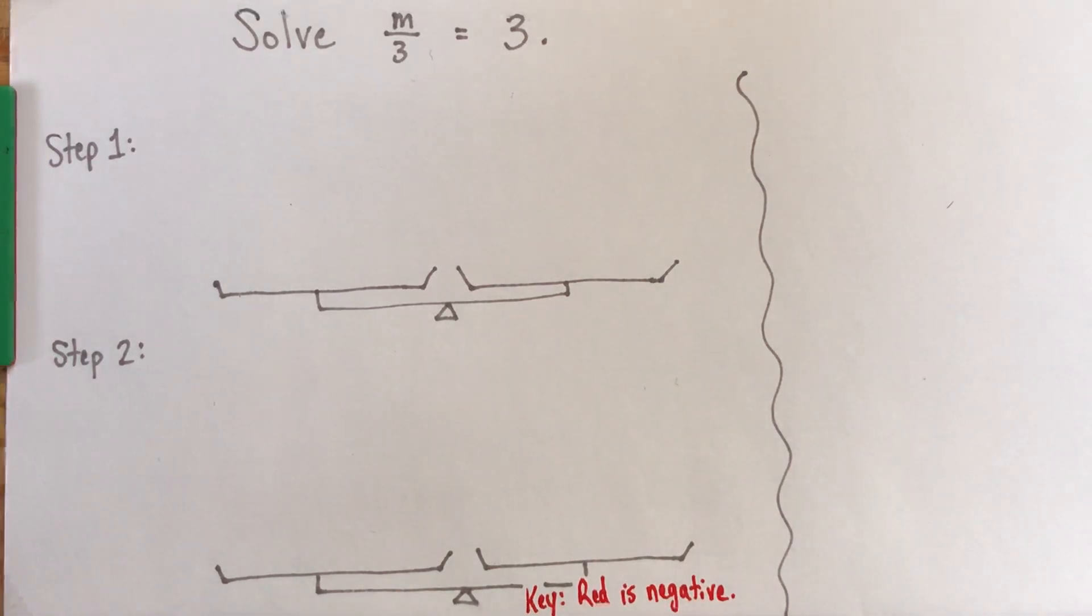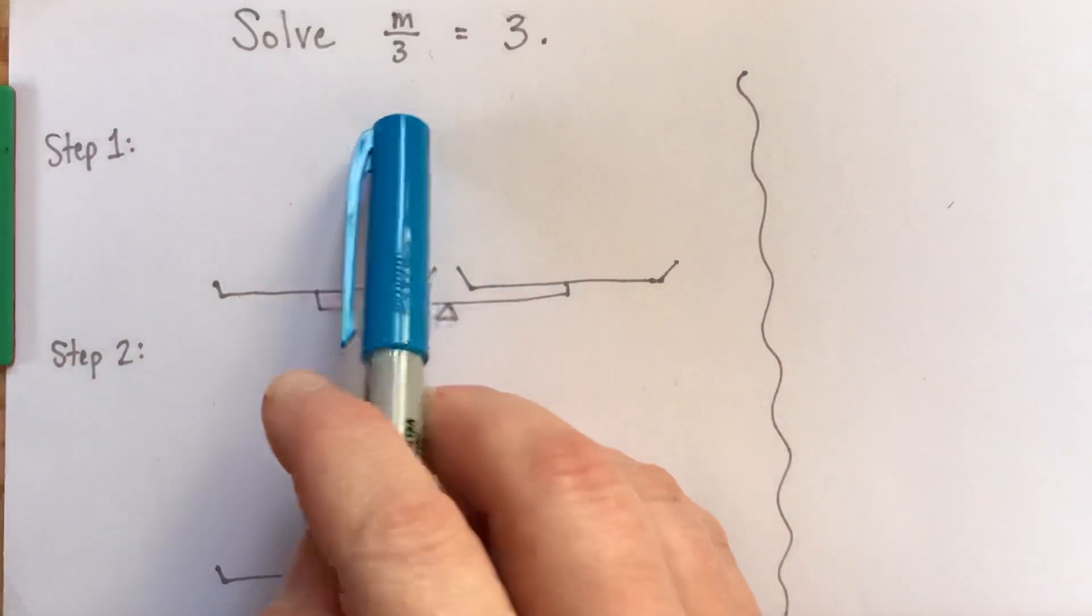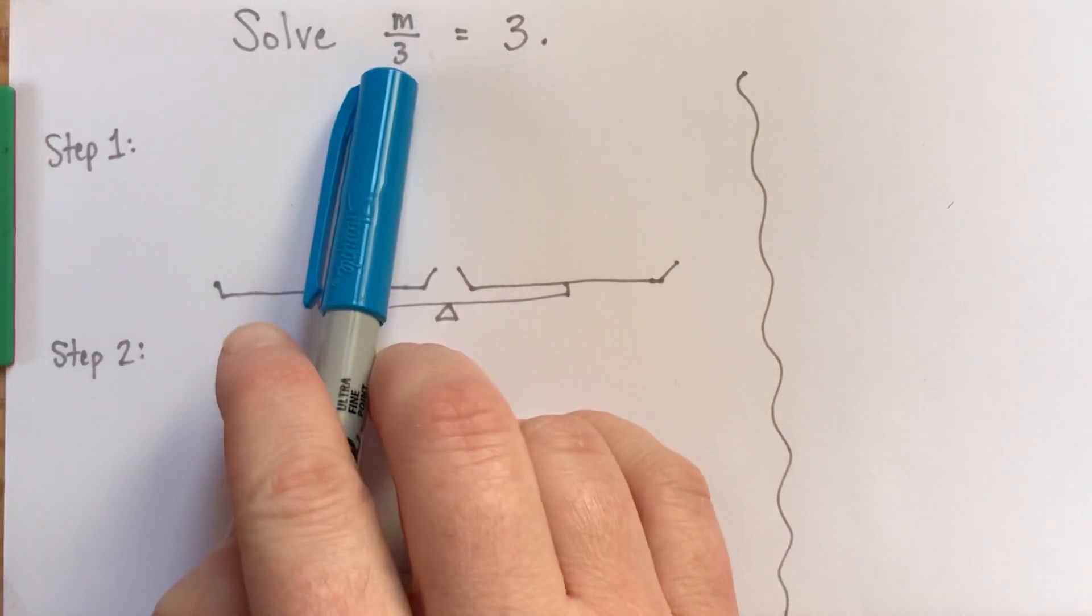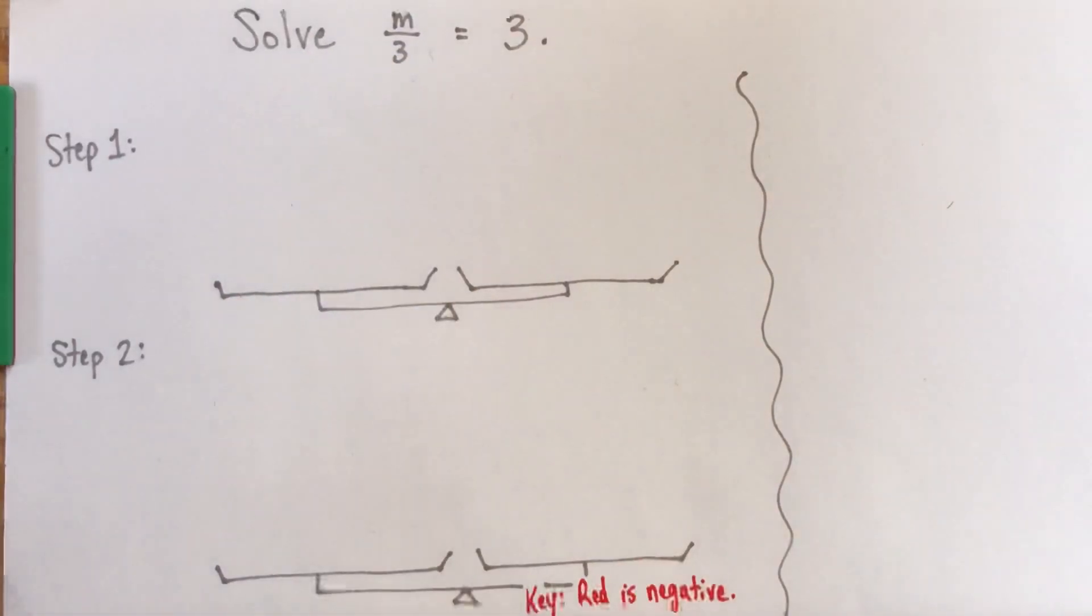Hi. In this video, we're going to solve a fairly simple equation here. m divided by 3 equals 3. And in particular, I'm going to show you how to think about solving this with algebra tiles. There are different ways of doing this, but this is the way that I prefer.